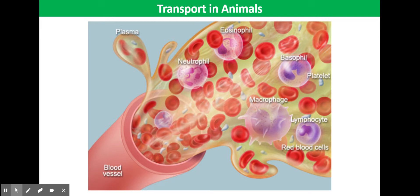Blood is the fluid held in our blood vessels. It consists of a liquid called plasma containing many blood cells. The plasma contains many dissolved substances including oxygen, carbon dioxide, minerals, glucose, amino acids, hormones, and plasma proteins.